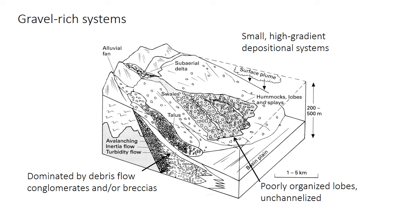In a more gravel-rich system with a lot of very coarse sediment supplied to the fan, deposition is dominated by debris flows, because turbulence often isn't powerful enough to support and move coarse-grained, very dense sediment flows found in gravel or pebble-cobble-rich environments. Due to their plastic rheology, these fans tend to be small and have high gradients. Plastic debris flows can't flow long distances or over low-gradient slopes because the shear stress is not enough to overcome the yield strain.